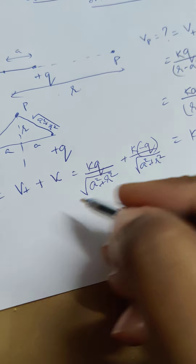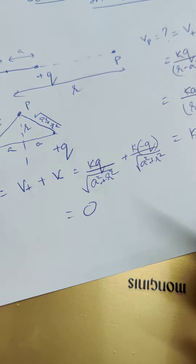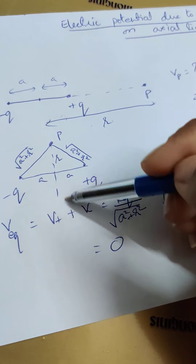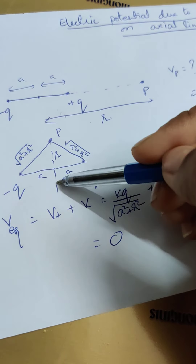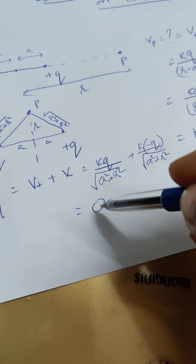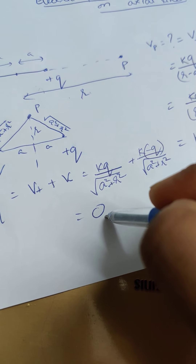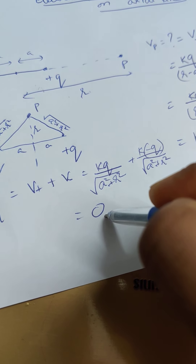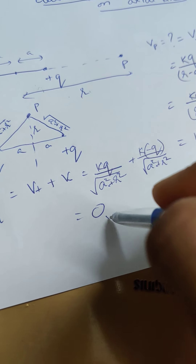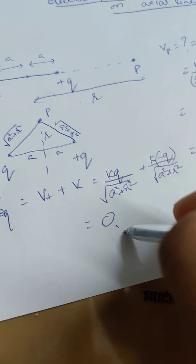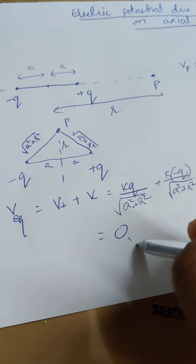The two terms cancel each other, giving zero. Therefore, the potential at any point on the equatorial line of a dipole is always zero.